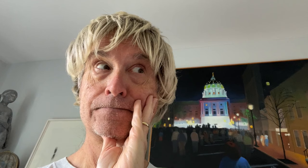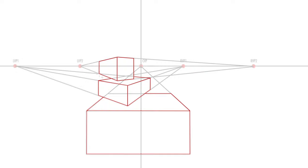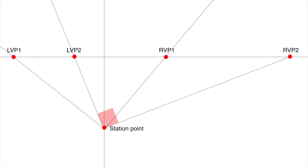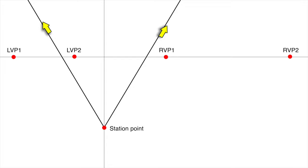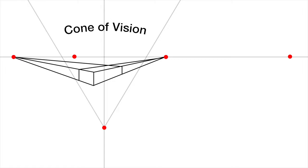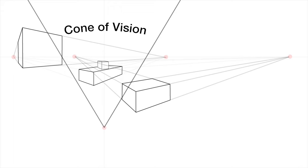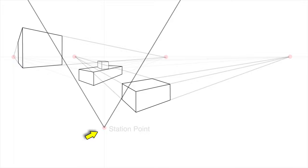If we place our three-dimensional boxes within the cone of vision, they tend to look normal. Adding boxes outside the cone of vision reveals distortions. So use a station point and keep your objects within the cone of vision — that will fix the distortion problem. If you set your left and right vanishing points randomly, your two-point boxes may well look screwed up, but if you set them using a station point, that problem will go away.